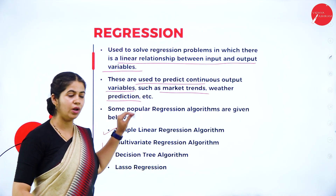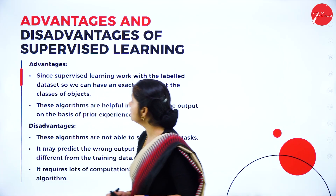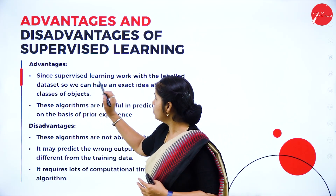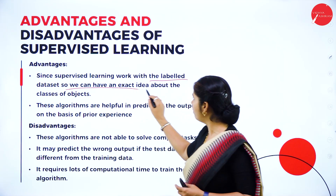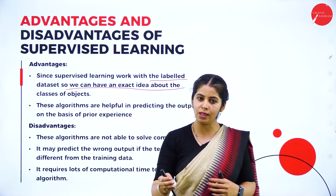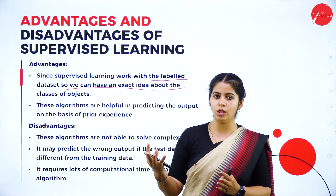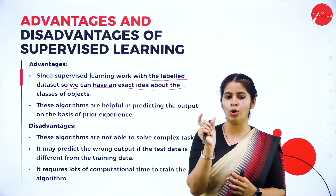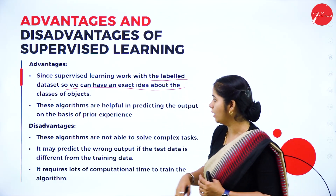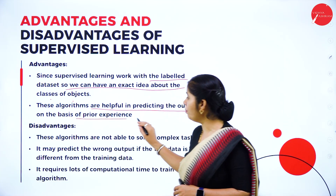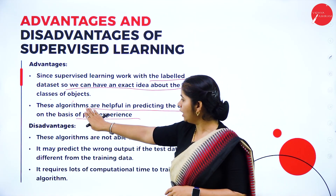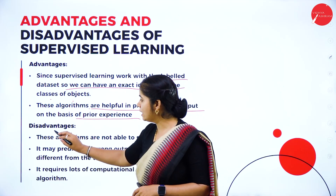Advantages and disadvantages of supervised machine learning: since supervised learning works with labeled data sets, we can have an exact idea about the object and the classes — for the given input, we know what the output should be. The programmer has proper knowledge of what classes and objects are used for training. These algorithms are helpful in predicting the output based on prior experience — depending on the prior training given to the machine, it can predict the next output.